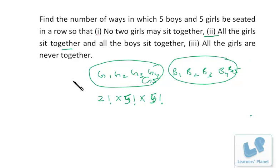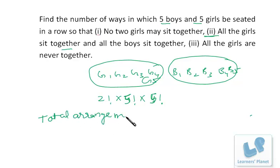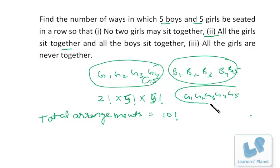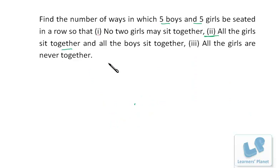The next condition is all the girls are never together. First, we find the arrangement when all the girls are together. The total number of arrangements with 5 boys and 5 girls, if there is no condition, will be 10!. Out of these 10! arrangements, we find out the arrangements when all the girls are together. We take them as one group — G1, G2, G3, G4, G5 — and the remaining five positions are for boys.